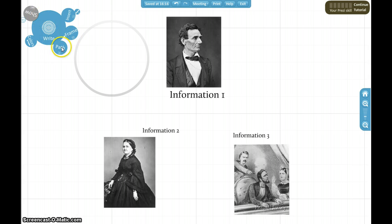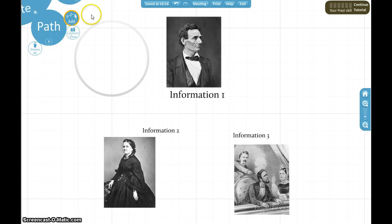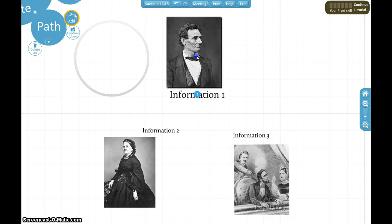Once you're ready and have all your information in, you can select your path. To create your path it's quite simple — just click on the information in the order that you want it to appear.